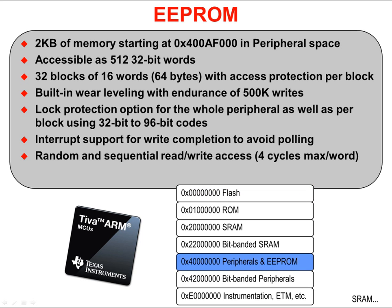Double EEPROM memory is 2K in length, starting at 0x400AF000. It is accessible as 512 32-bit words, broken up into 32 blocks of 16 words. Each block has access protection built-in using 32 to 96-bit codes.